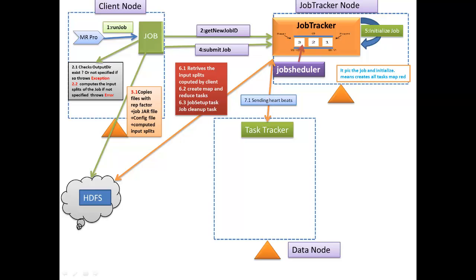In the next step, the job tracker assigns mapper jobs to specific task trackers. When assigning a mapper, the job tracker chooses the ideal task tracker based on data locality — meaning the input split resides on that particular data node. This is called data locality.